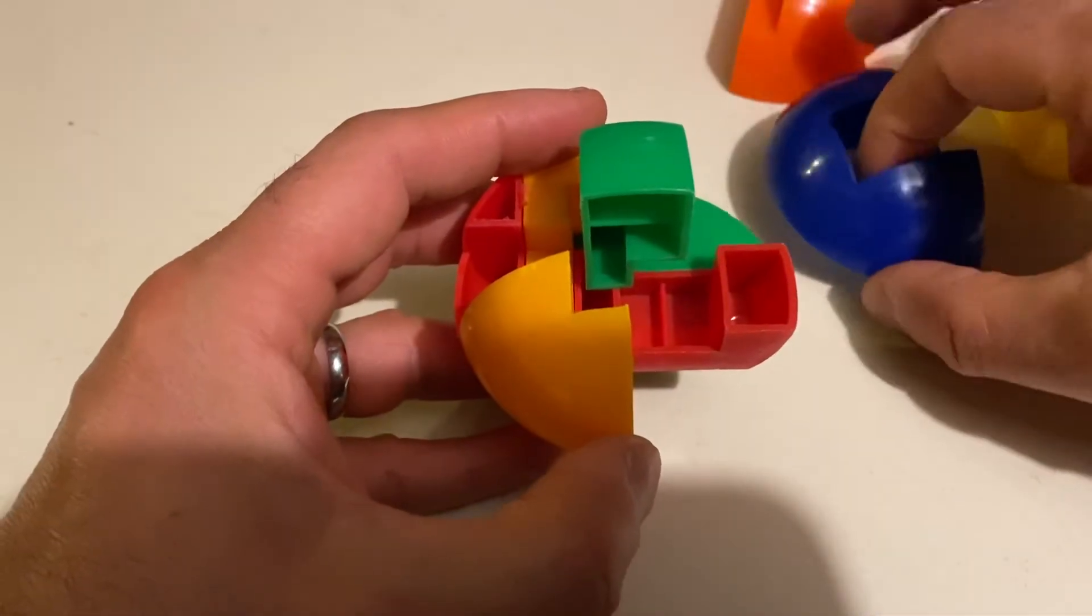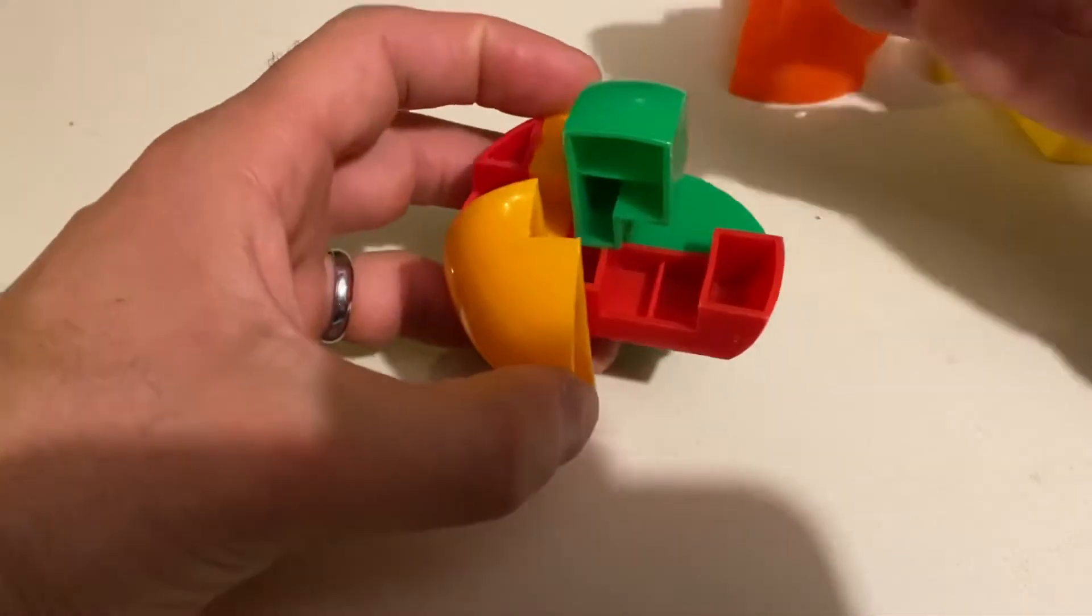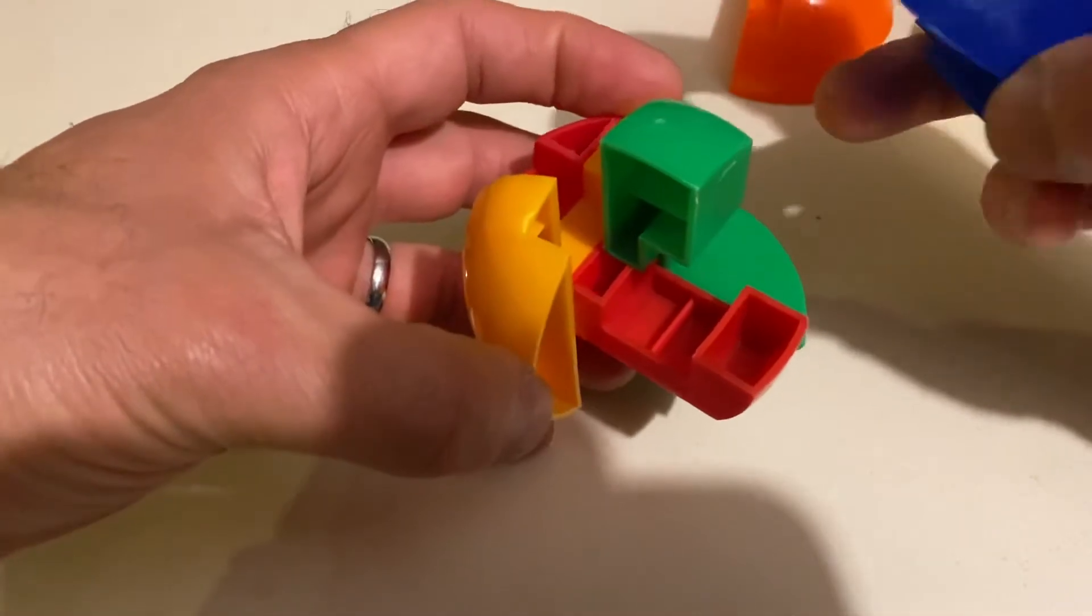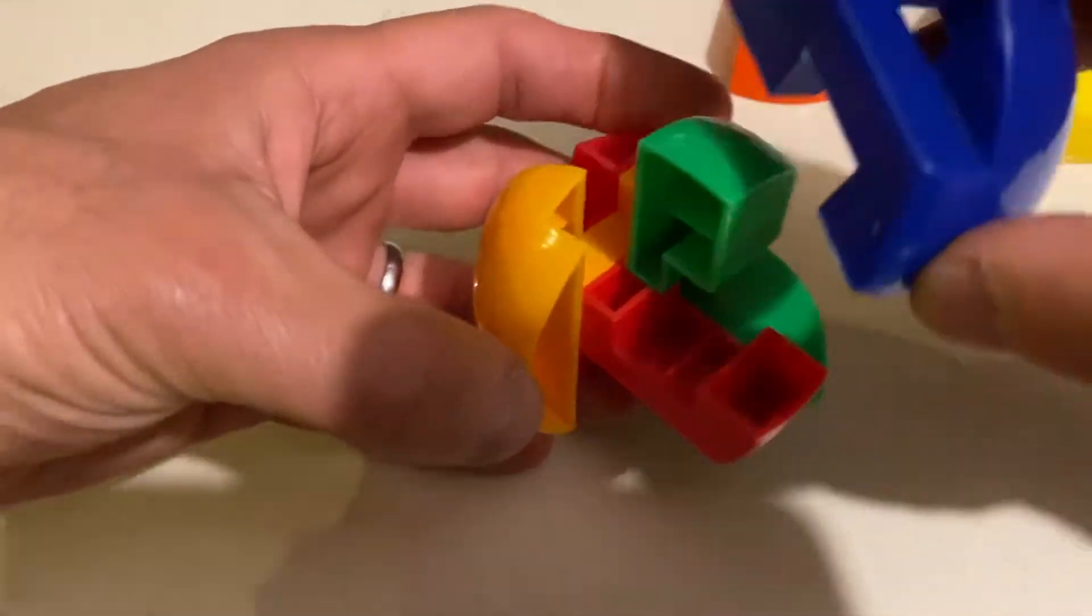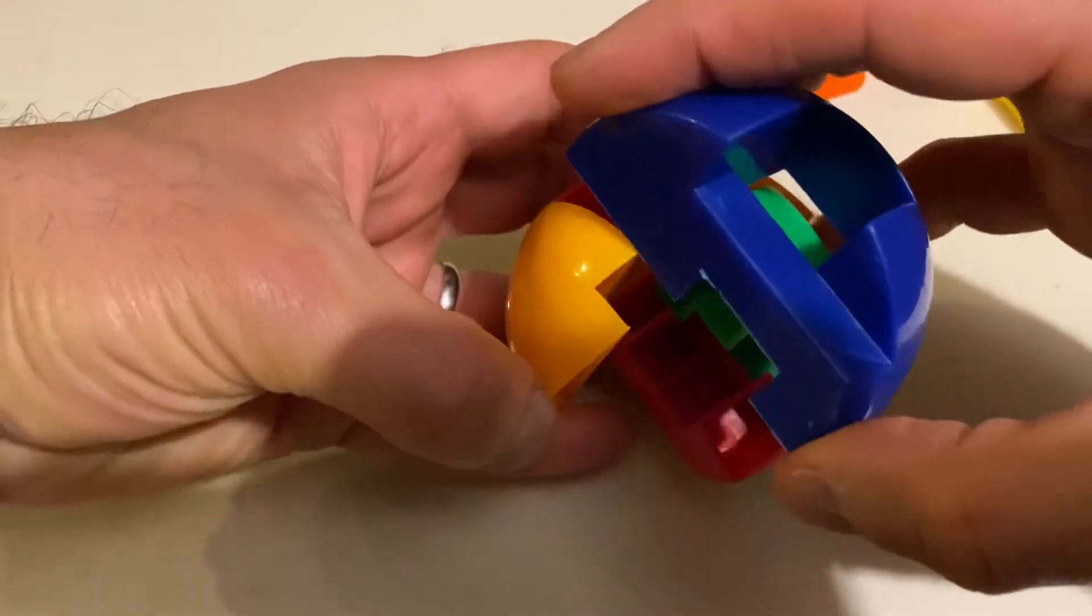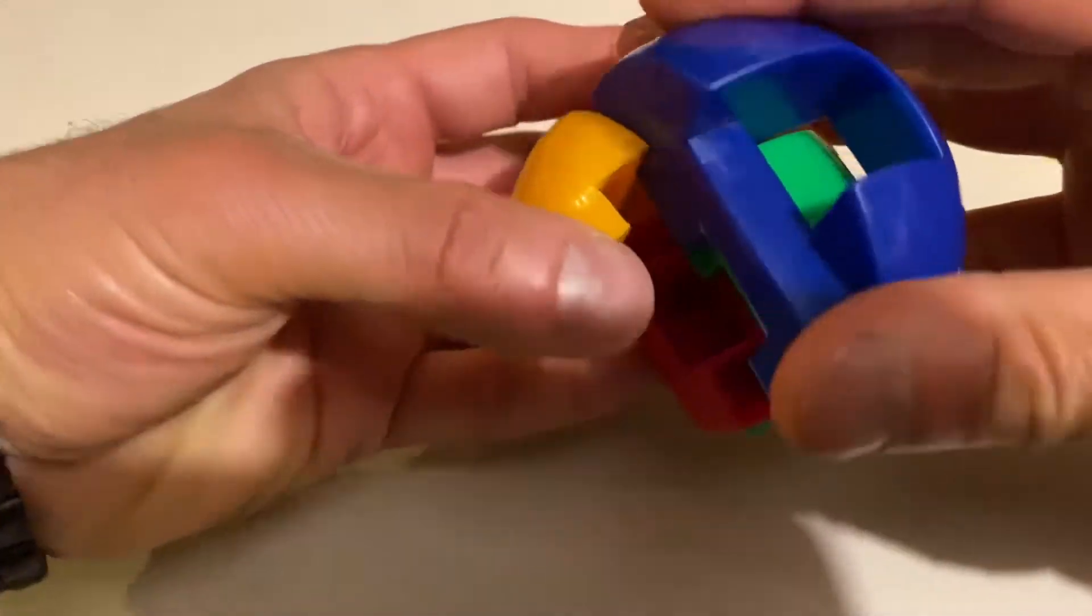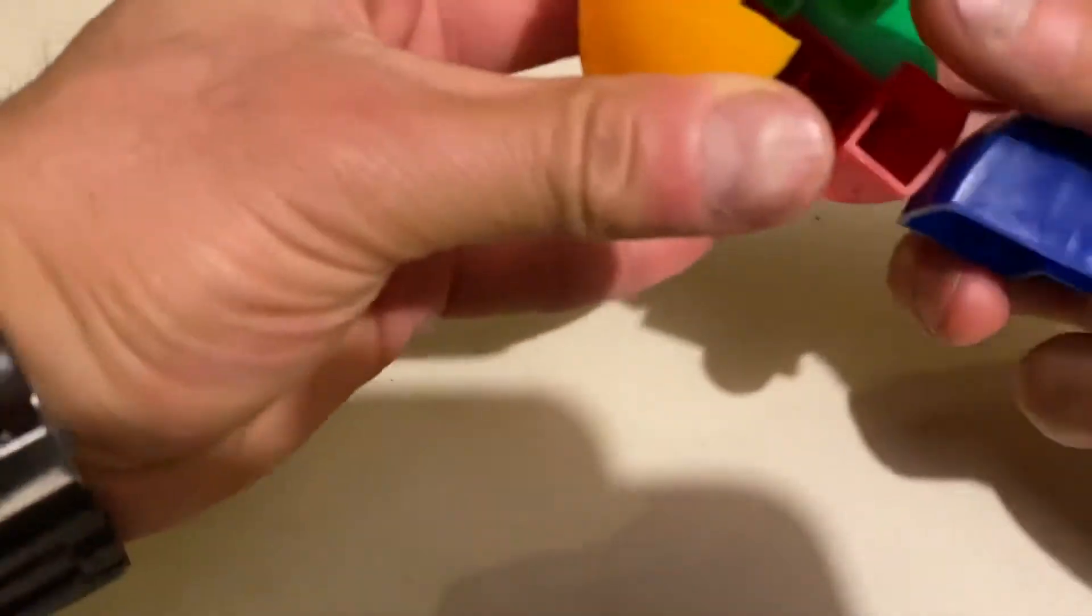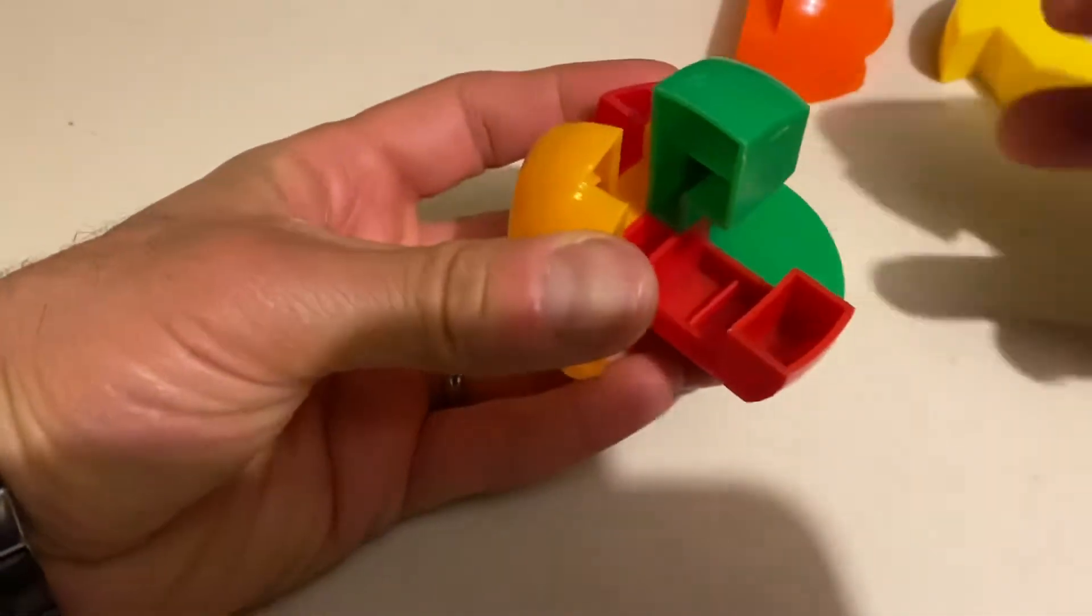From there we have this piece right here, the blue piece in this case. We follow the curvature of the ball and it goes in kind of like... it fits into this protruded part.